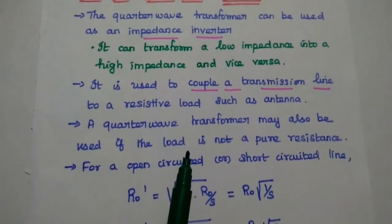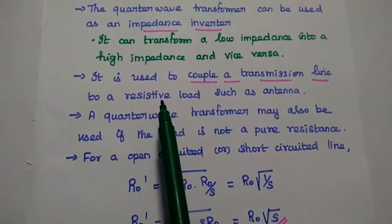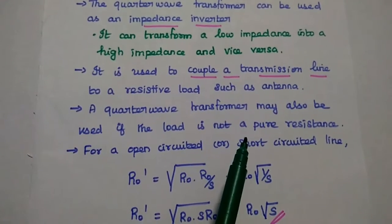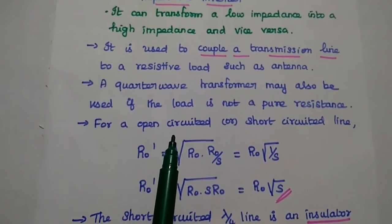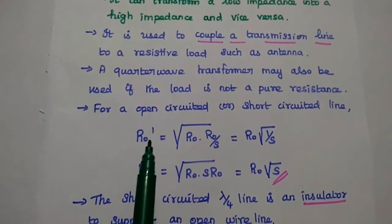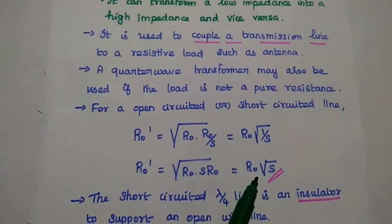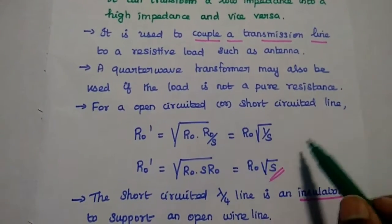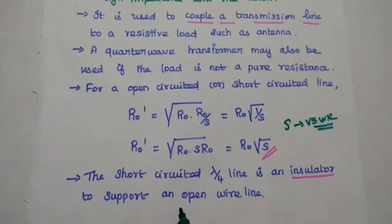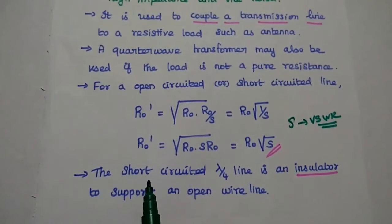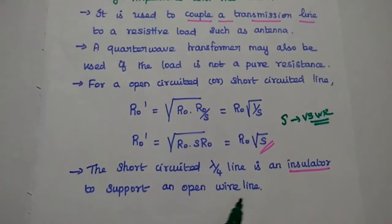A quarter wave transformer may also be used when the load is not a pure resistive. If it is an open-circuited or short-circuited line, we can get the characteristic impedance of the quarter wave line section as R naught times square root of 1 by S, or R naught times square root of S, where S is the VSWR — the standing wave ratio. Finally, the short-circuited quarter wave line can also be used as an insulator to support an open wire line.